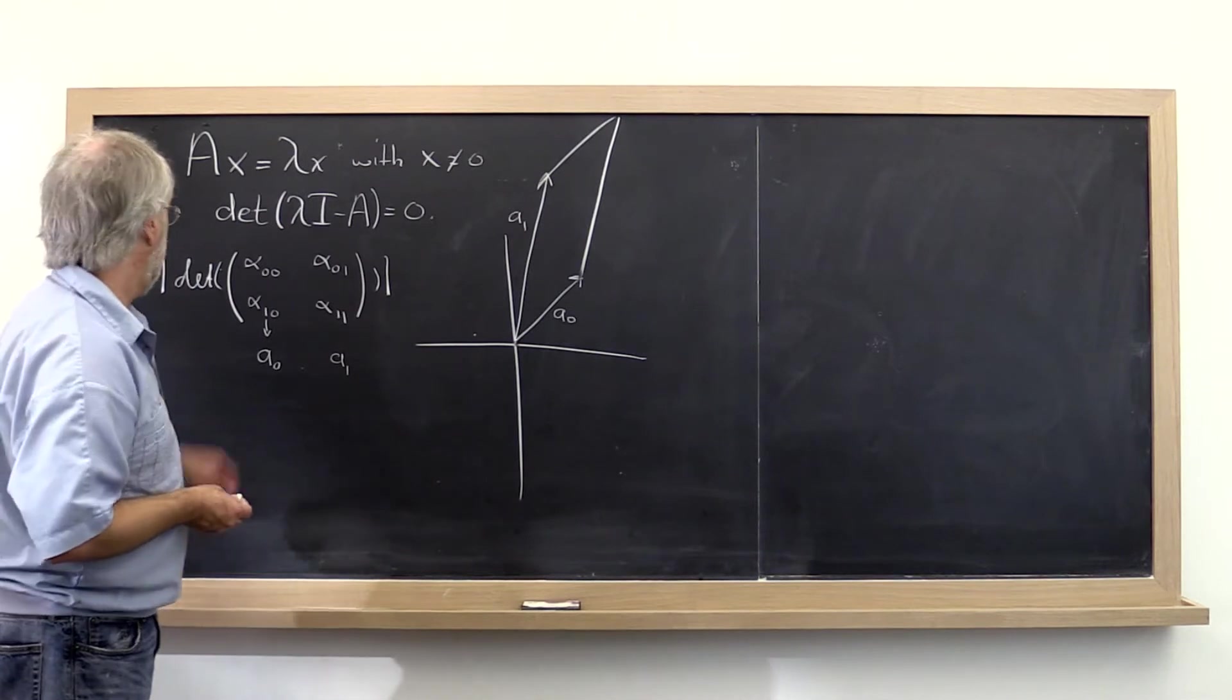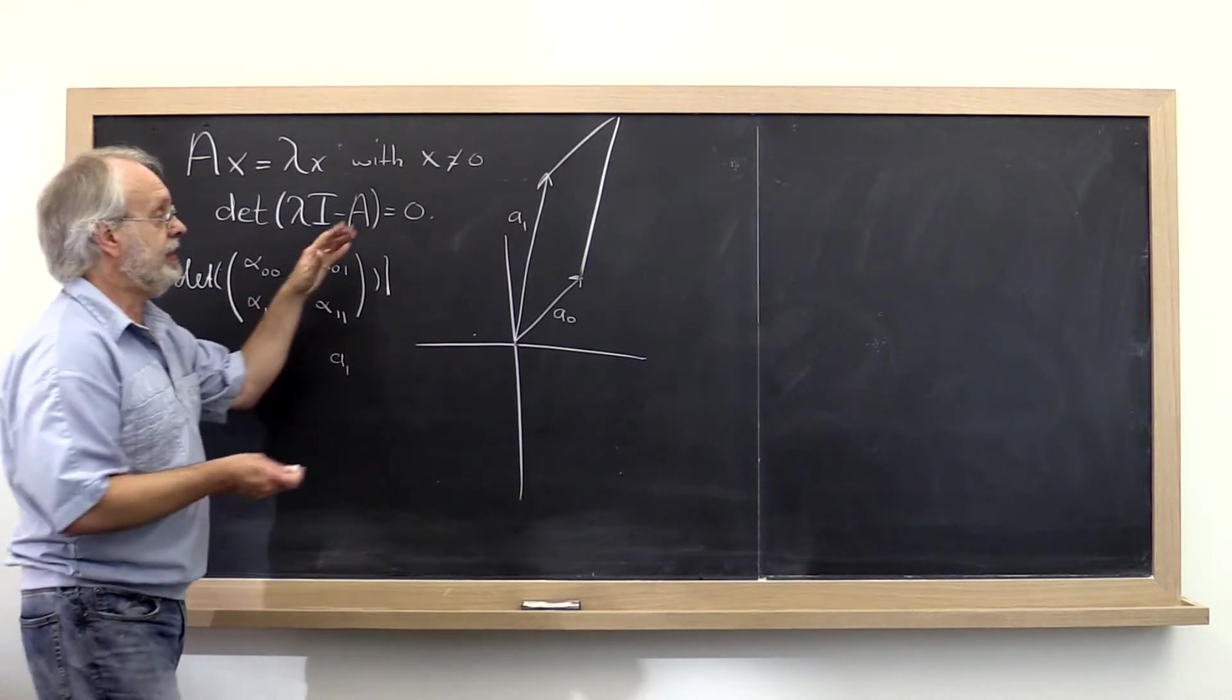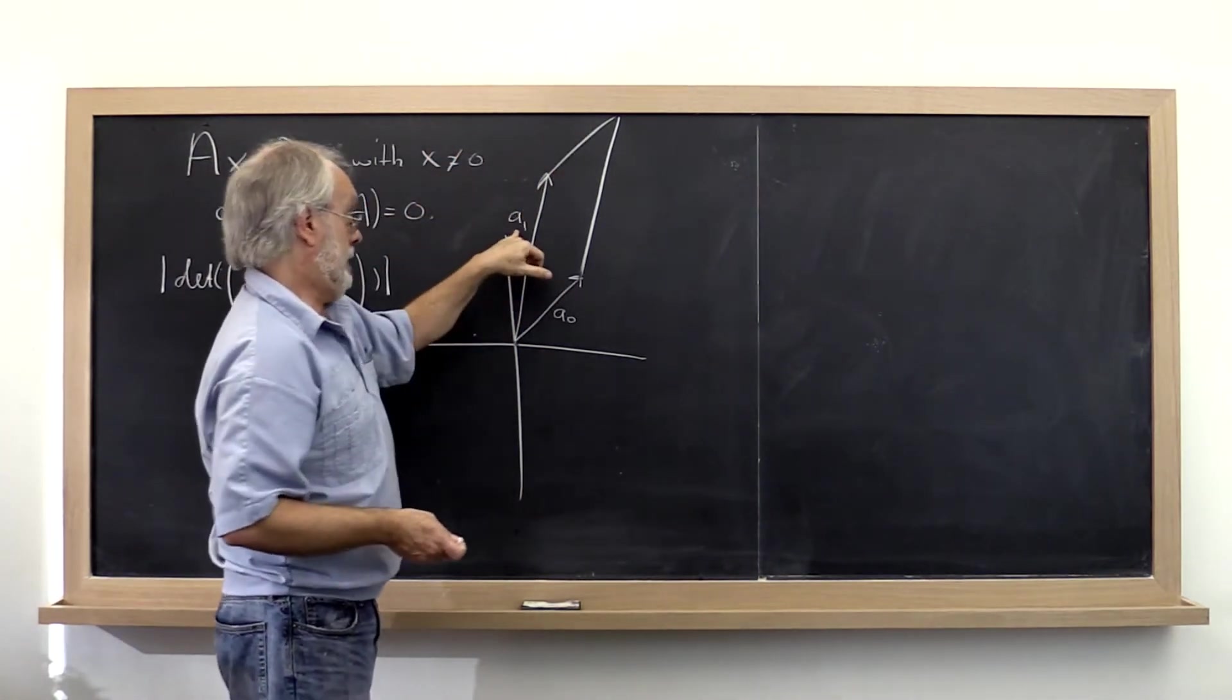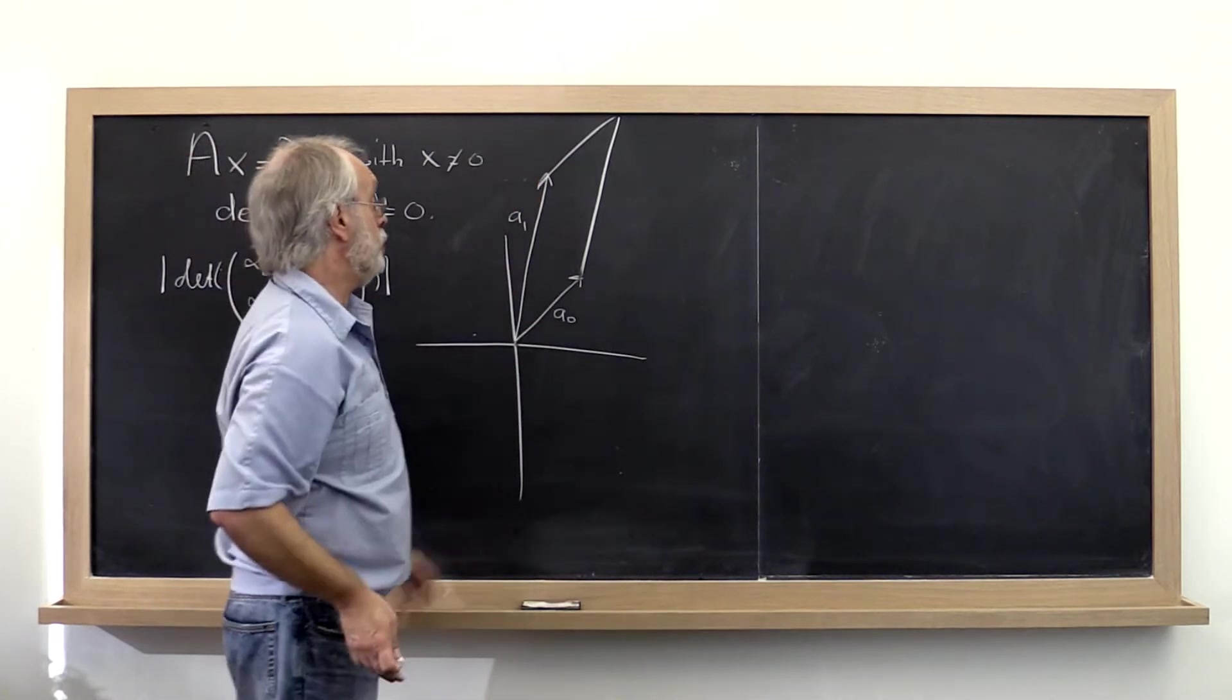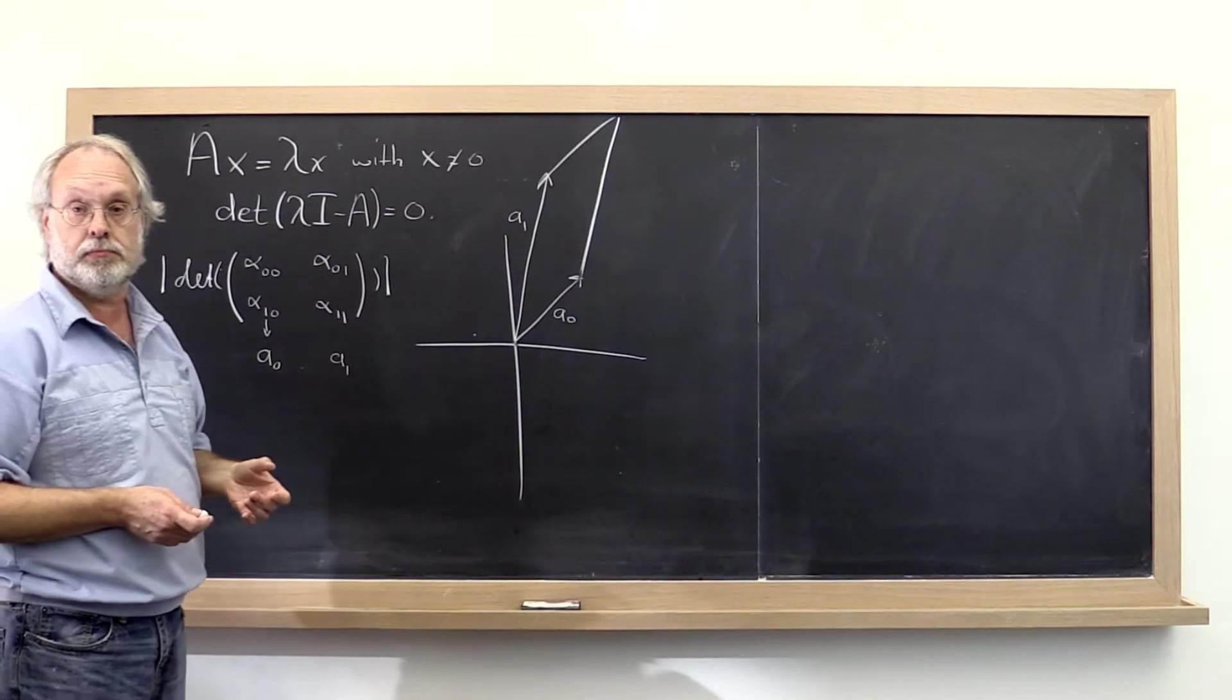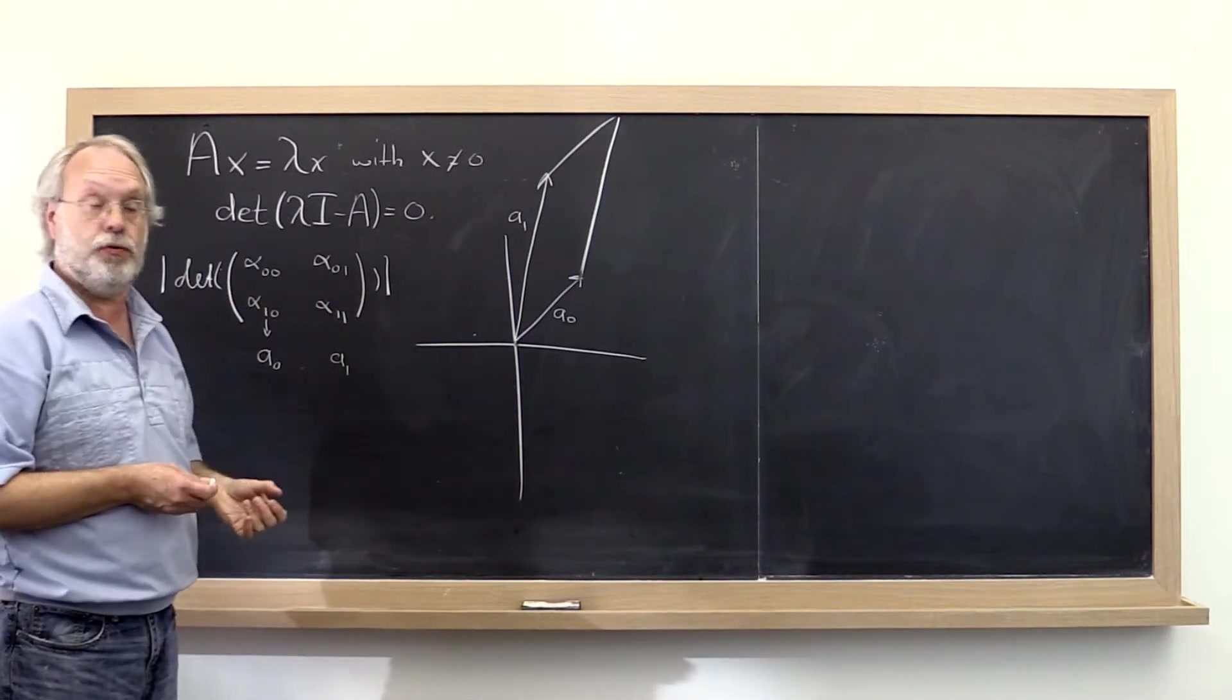Notice that if the determinant is equal to zero, then that means there is no area in this parallelogram. And what that means is that A0 and A1 point in the same direction and therefore are linearly dependent. A whole bunch of stuff relates to things we've seen before.